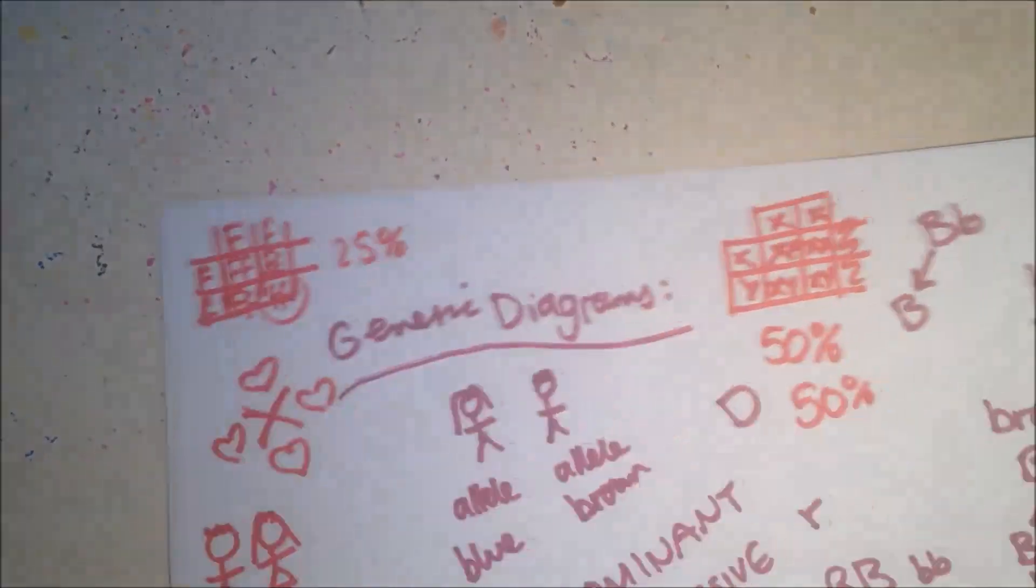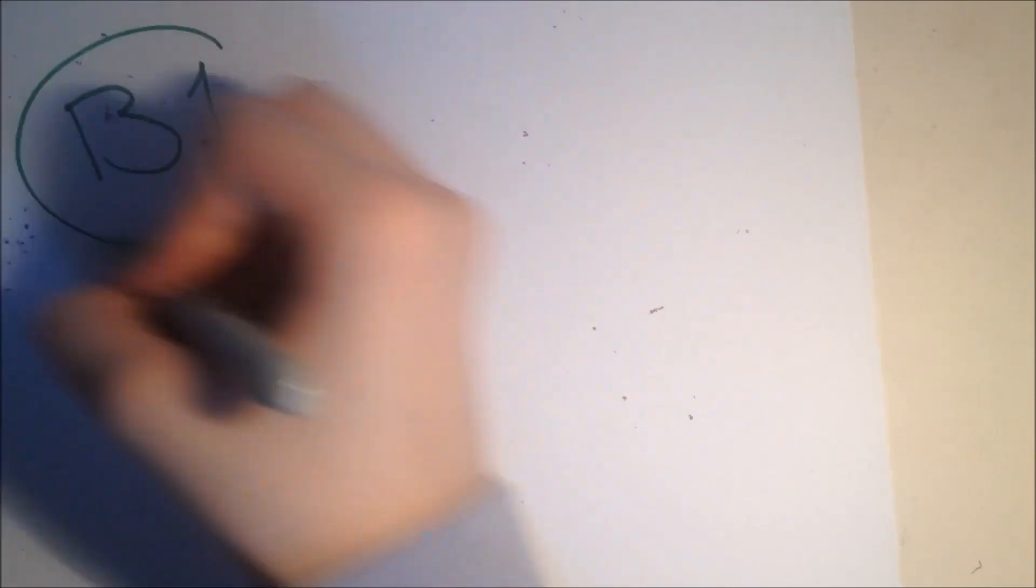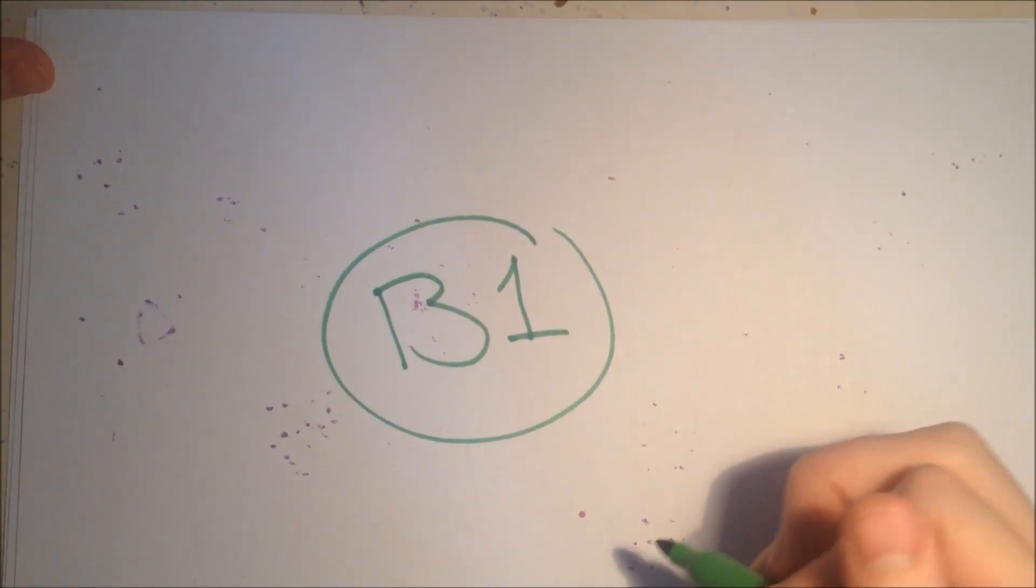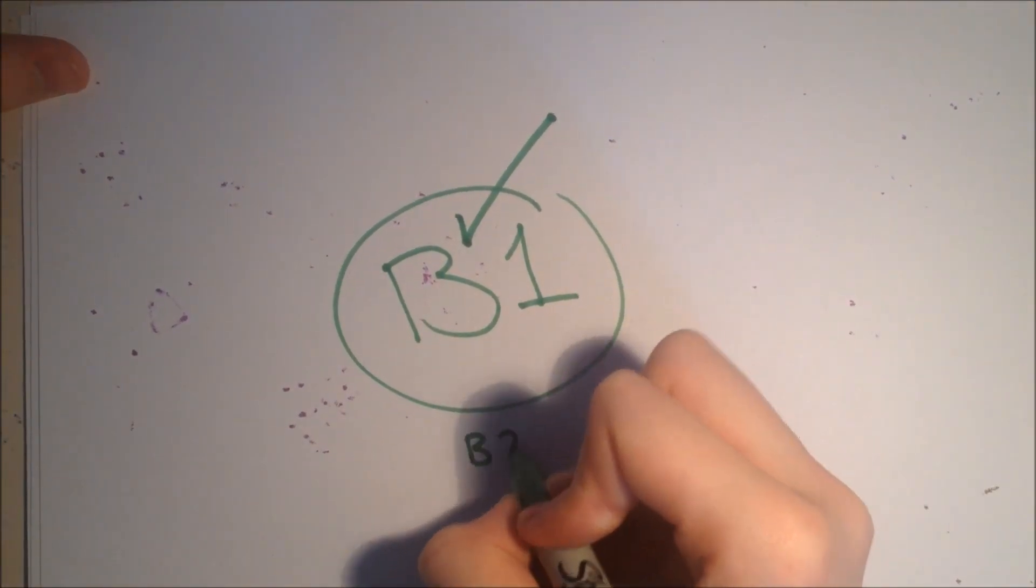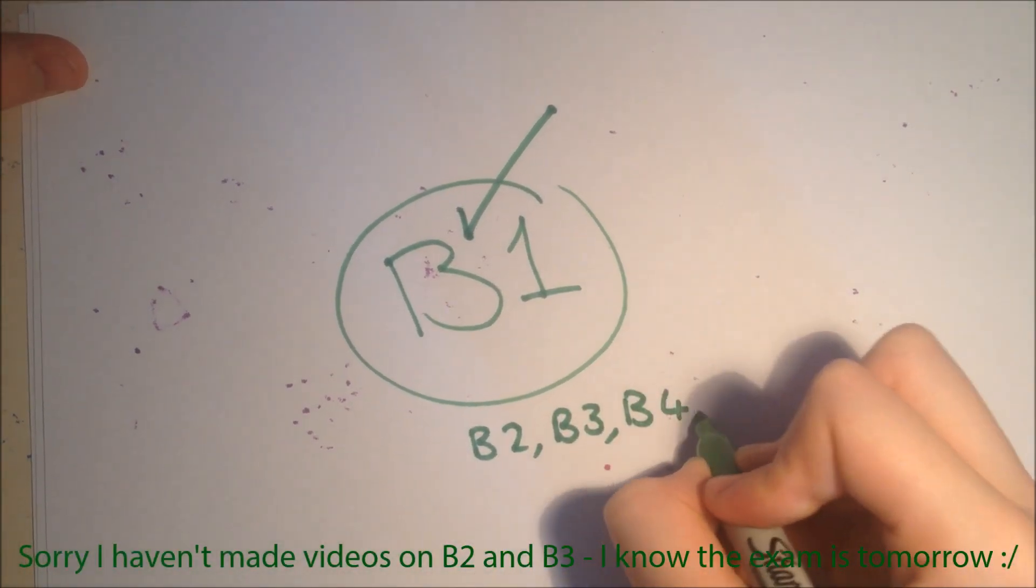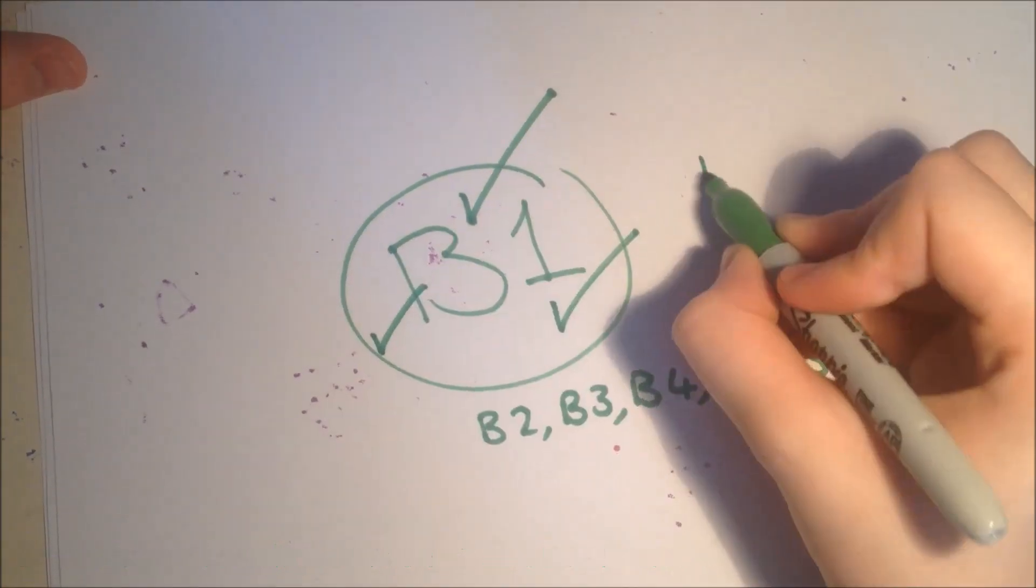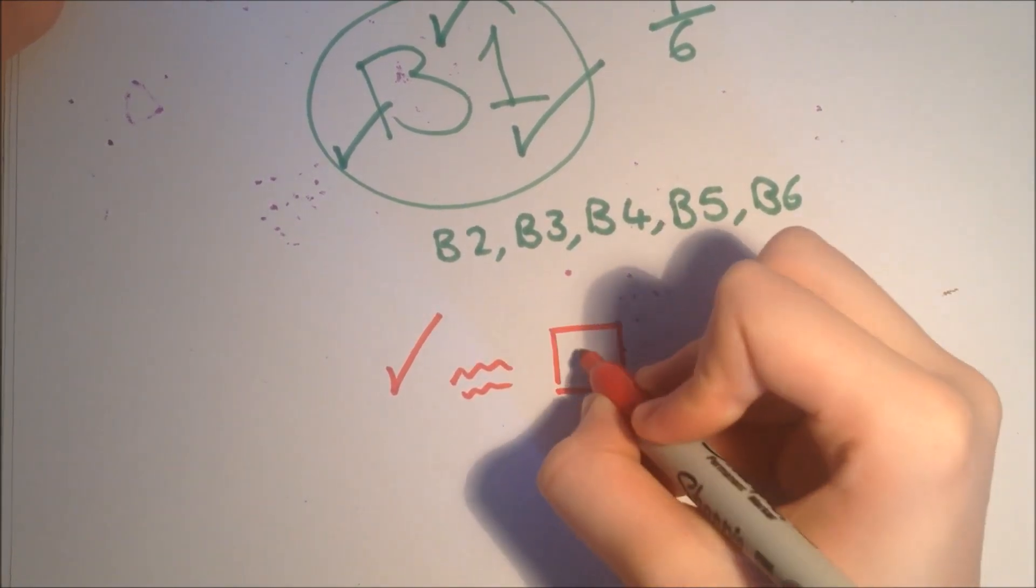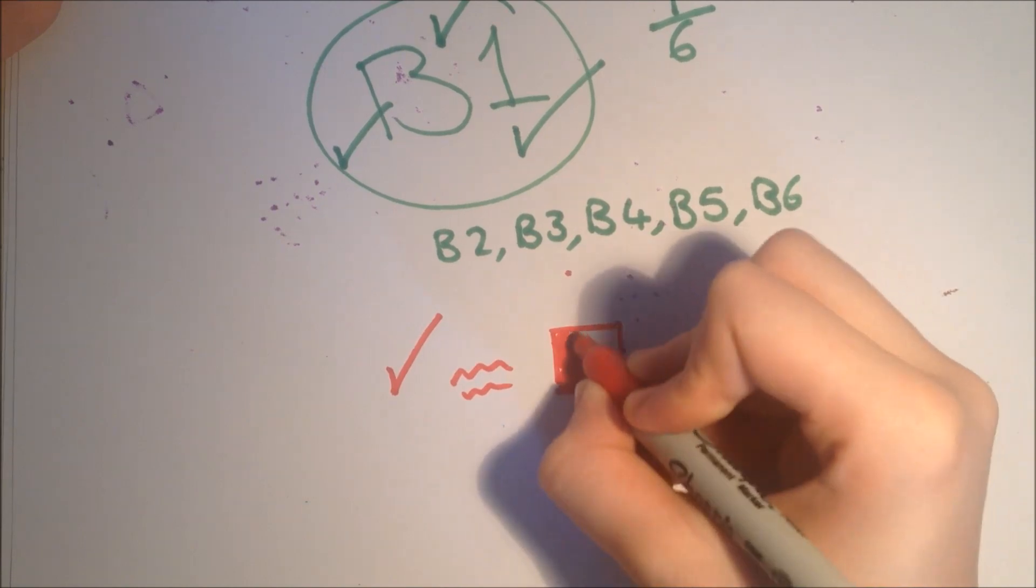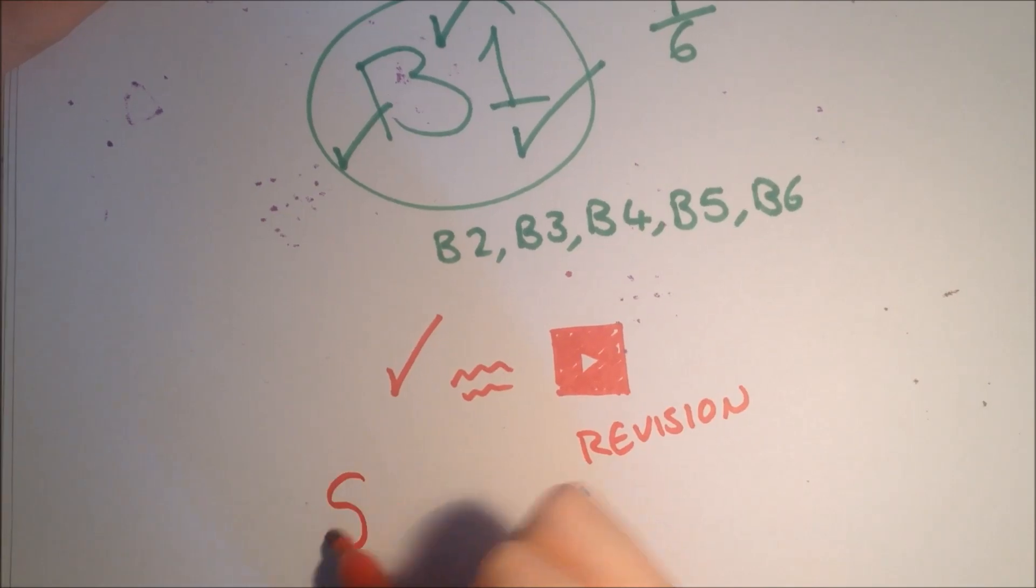It's now getting into the ethics side of the genetics. So that's all of B1 done. I hope you enjoyed learning about B1, and this revision's now finished. We've still got B2, B3, B4, B5, and B6 to learn, but we've done B1. Hooray! One out of six done. Don't forget to like, comment, and subscribe for probably videos every week now on revision. Any more ideas for videos, please leave a comment below.